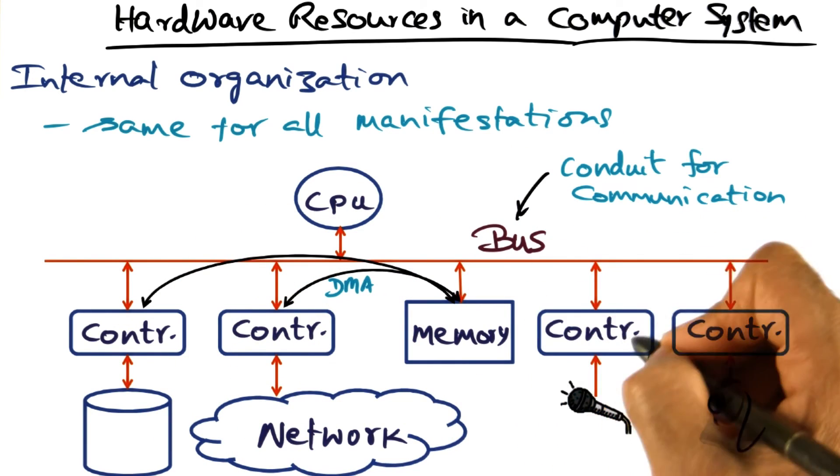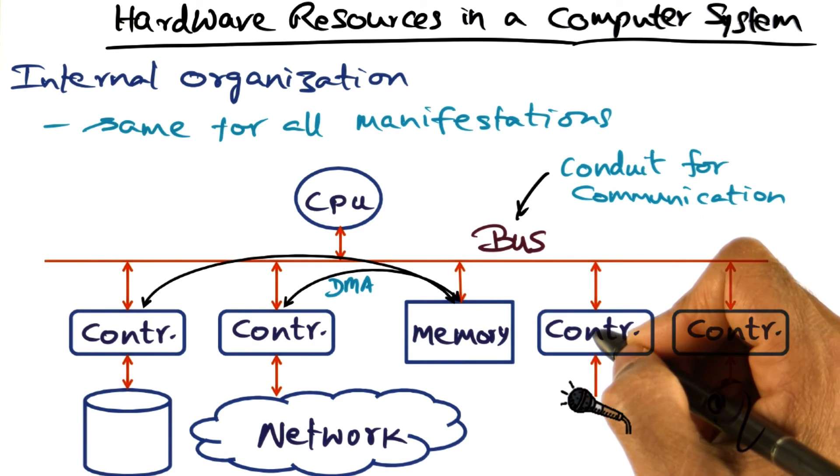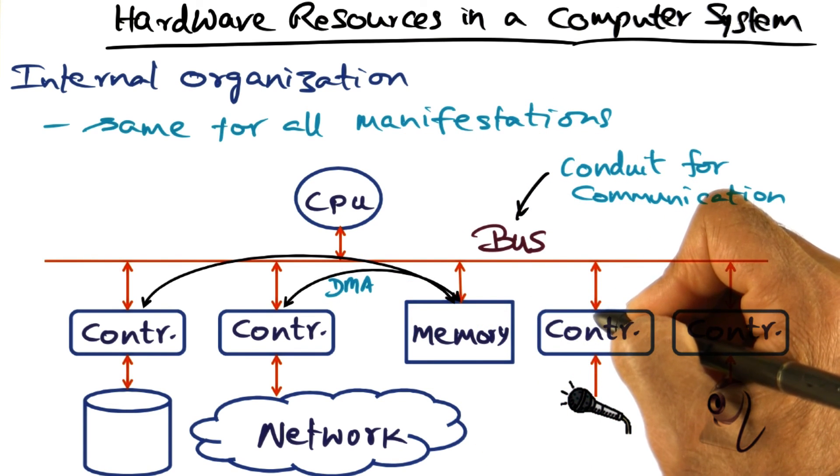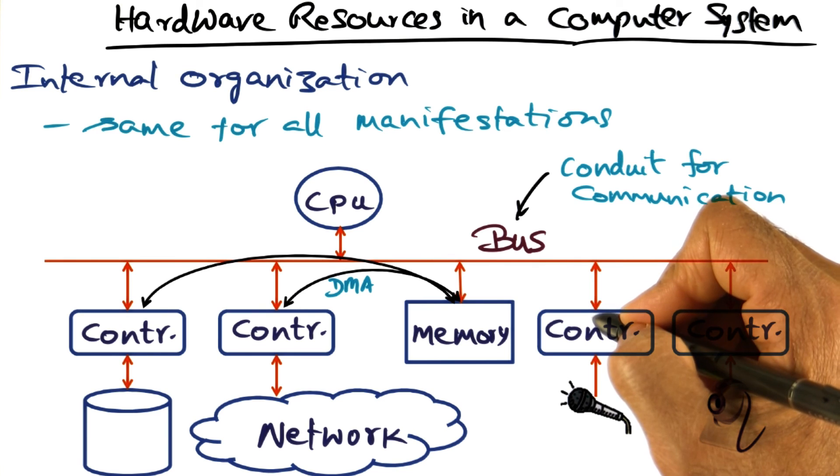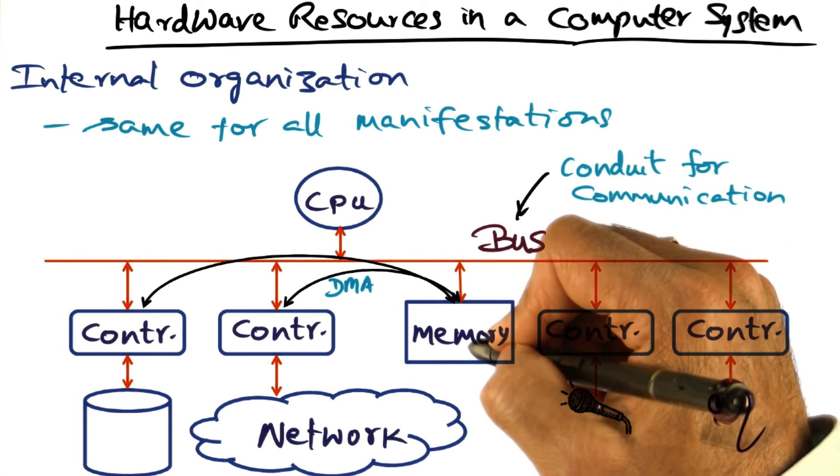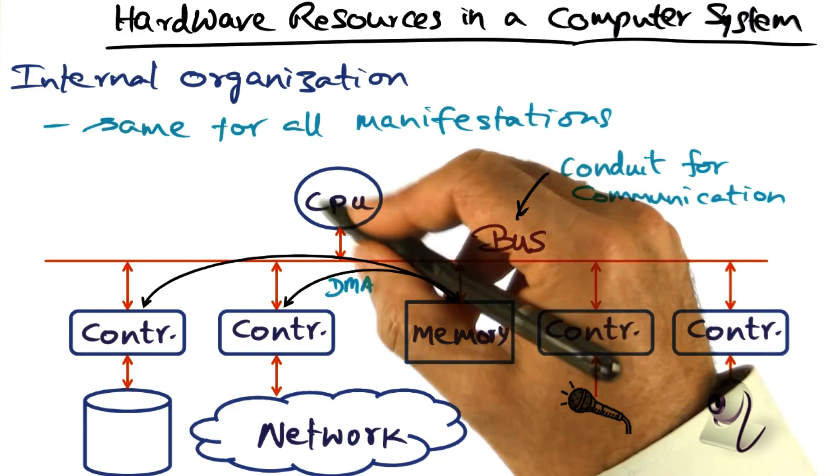Some of these controllers may be slow enough, for instance, a keyboard or a mouse, that the CPU can directly query new data that is coming from the controller that is associated with slow speed devices and move it into memory or use it in any fashion that it wants.